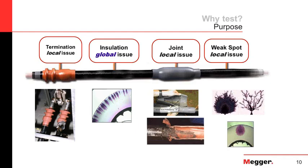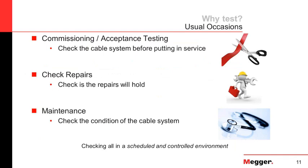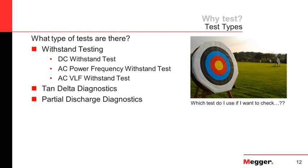When it comes to testing, there are three different occasions. The first is commissioning — checking your cable system before you put it in service. Someone could have done a repair, and you're checking to see if the repair will hold. And then of course there's maintenance testing, which checks the condition of the cable system. There are various types of tests: DC withstand, AC power frequency withstand, AC VLF withstand, tan-delta diagnostics, and partial discharge diagnostics.